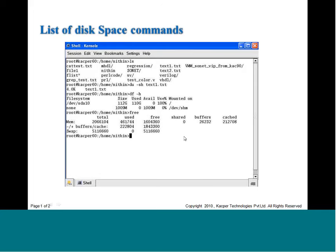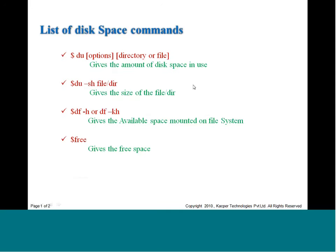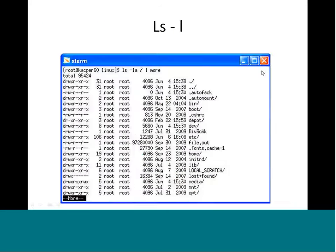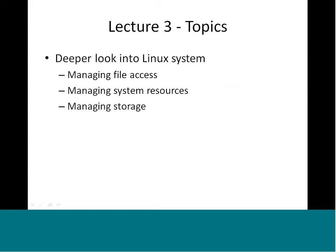The free command shows total memory, used memory, free memory, shared memory, buffers, and cache. The swap space is used for swapping programs in and out of memory. This brings us to the end of lecture 3. To recap: we covered file access management including r, w, x permissions, user, group, and others permission sets, and how to change access using chmod, chown, and chgrp.